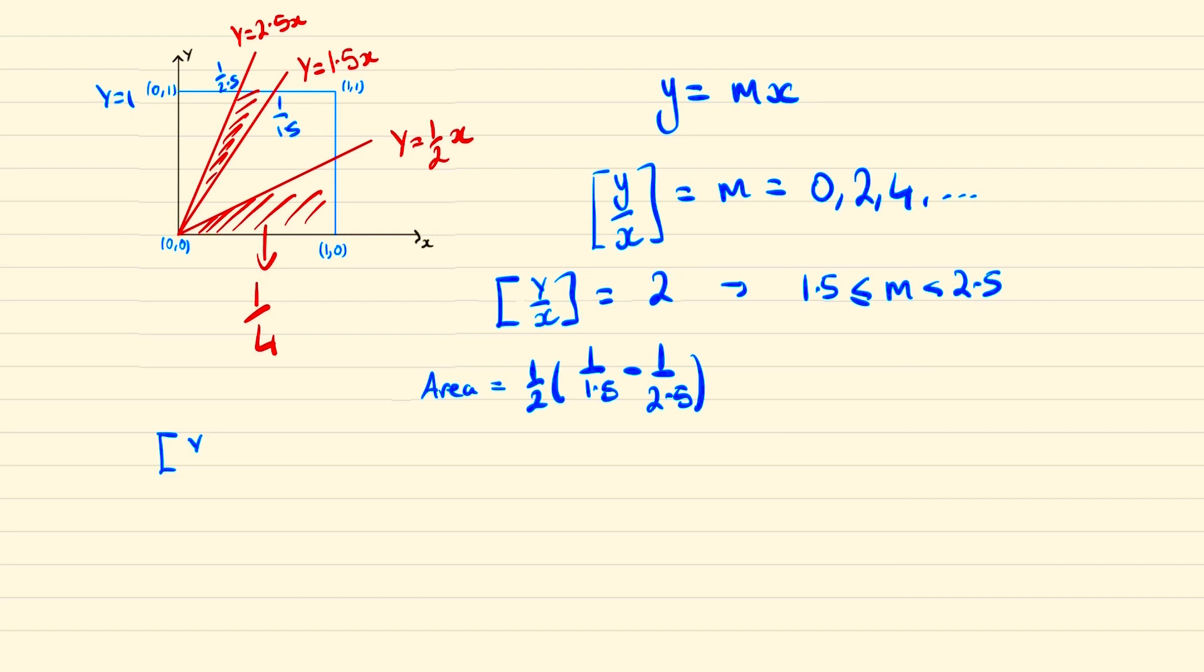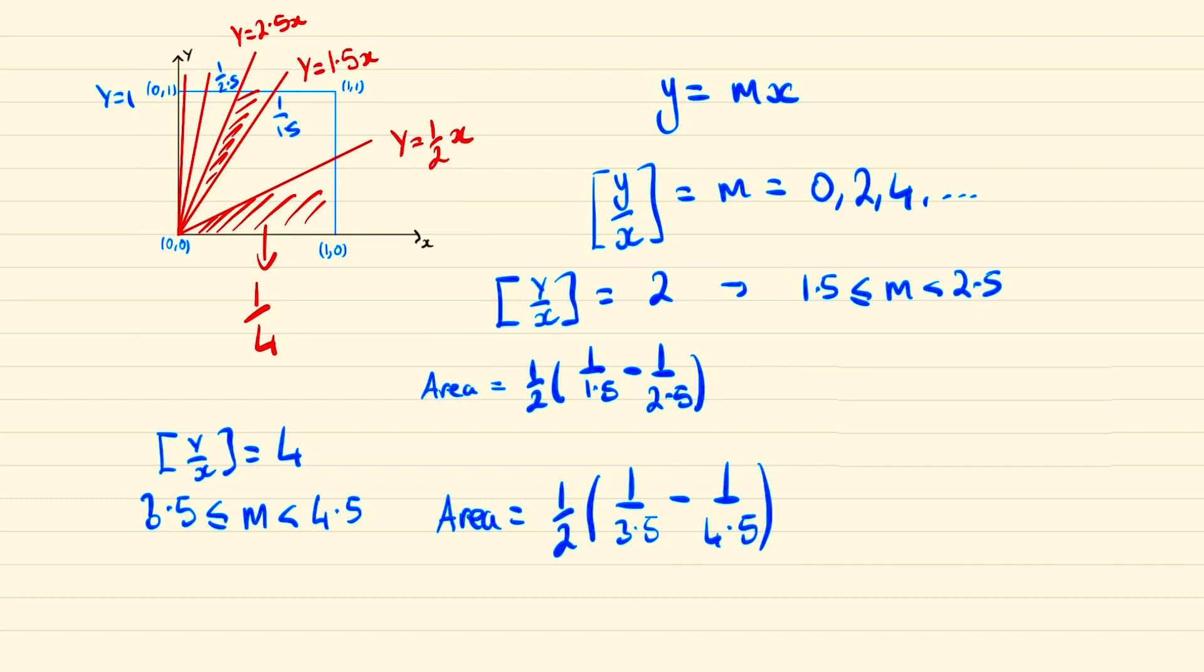If we do the same thing again and consider when is y/x going to round to 4, then this is considering when m lies between 4.5 and 3.5, and so we can represent this as another triangle. And again ask what is the area of that? So the area of that triangle and the probability that it will round to 4 will be (1/2) × (1/3.5 - 1/4.5).